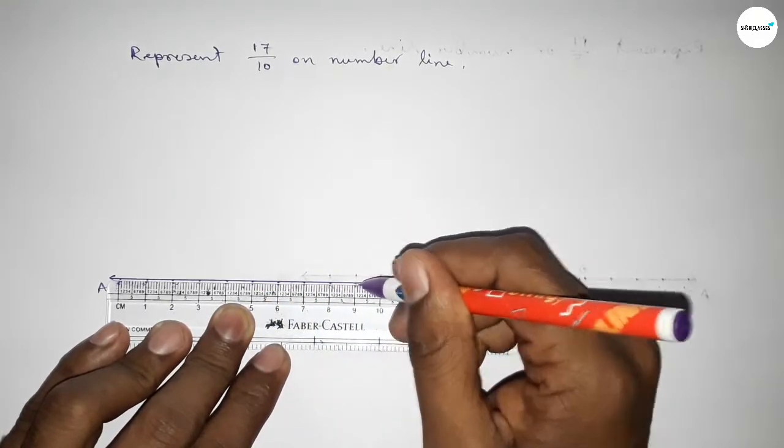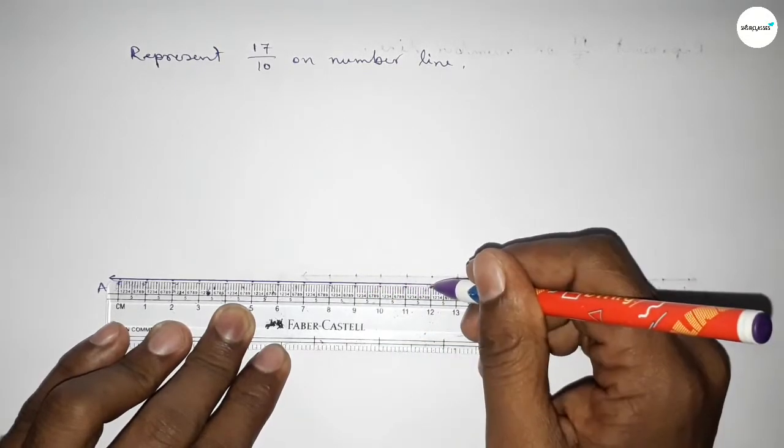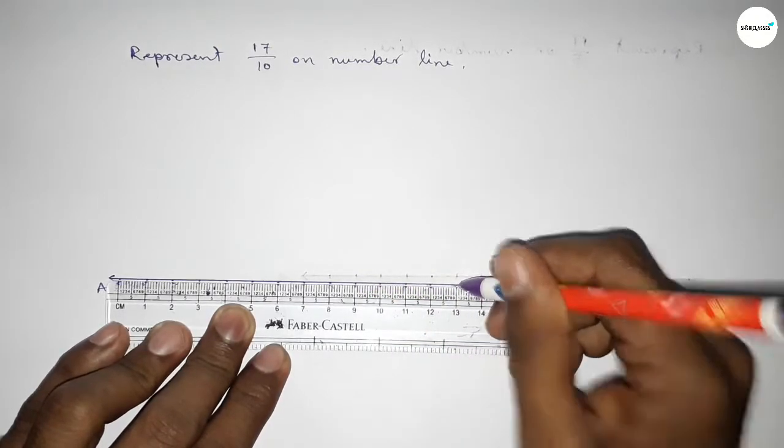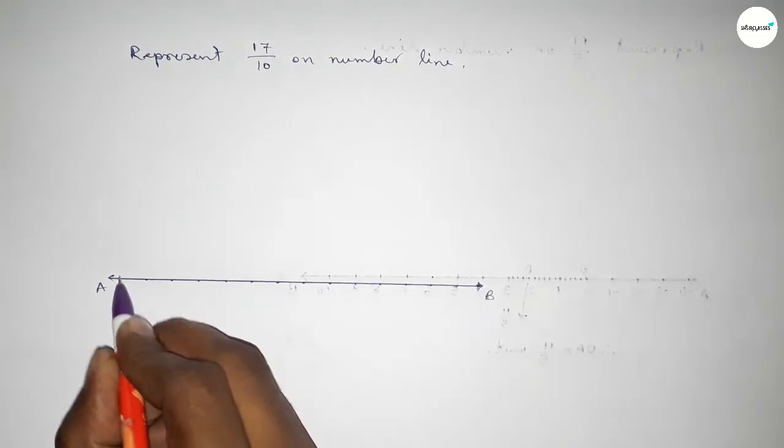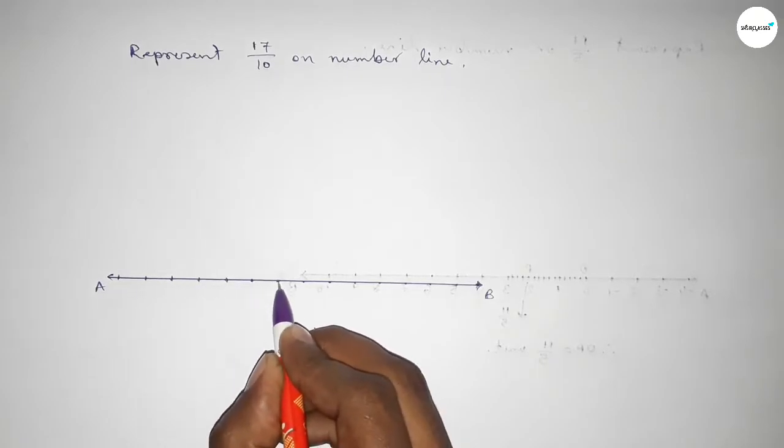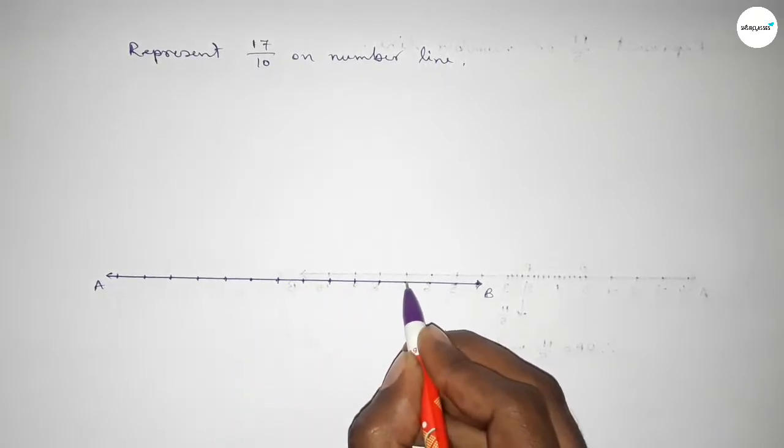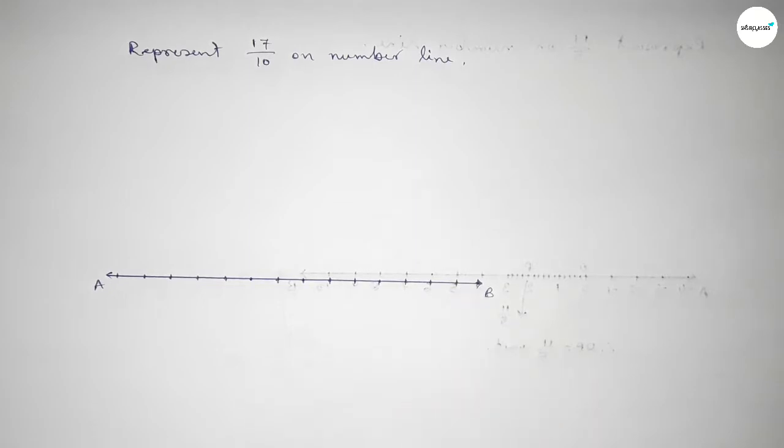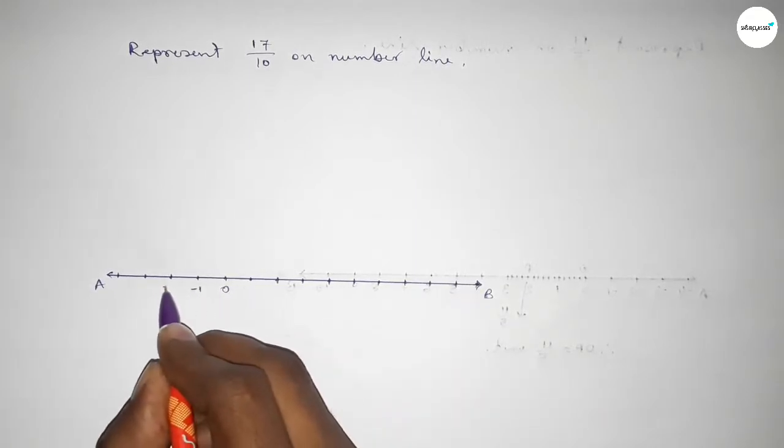Now marking the numbers on the line with a deep color to understand perfectly. First, marking the starting number 0.